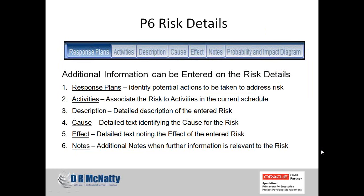One of the things I like about the new risk capabilities in Release 8 is the ability to track a lot more information. What we see now is on the risk details, when I assign a new risk, I have the ability to track a lot more information such as response plan. I can associate a risk to activities in the current schedule, and I can have risk text fields for description, cause, effect, and even notes that might be applicable to the risk. What I'm now able to do is input more information and allow other users of P6 EPPM projects to identify and see more information related to risk on a particular project.